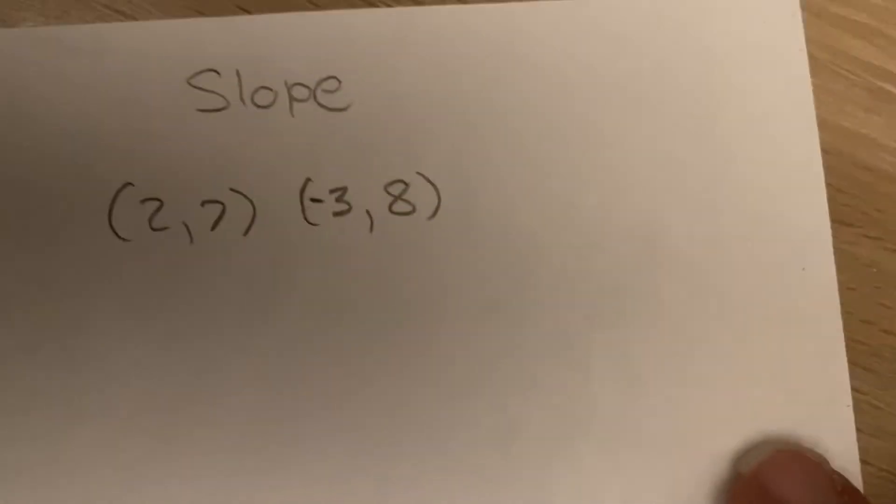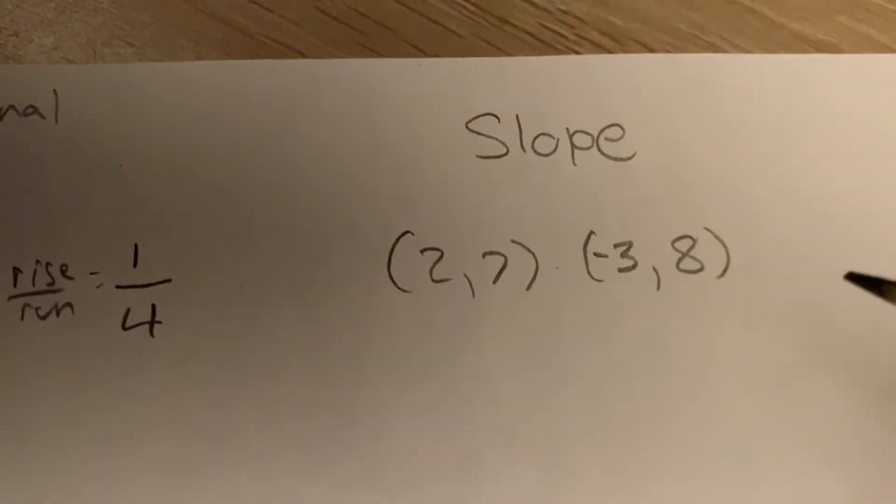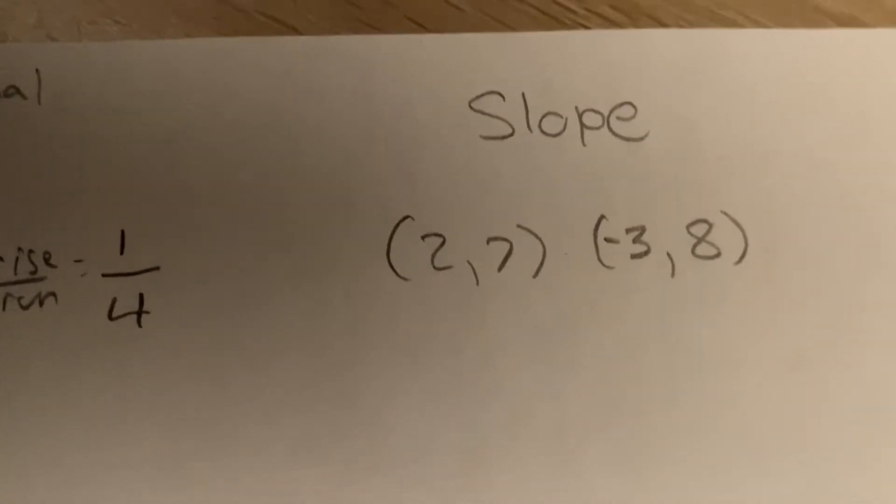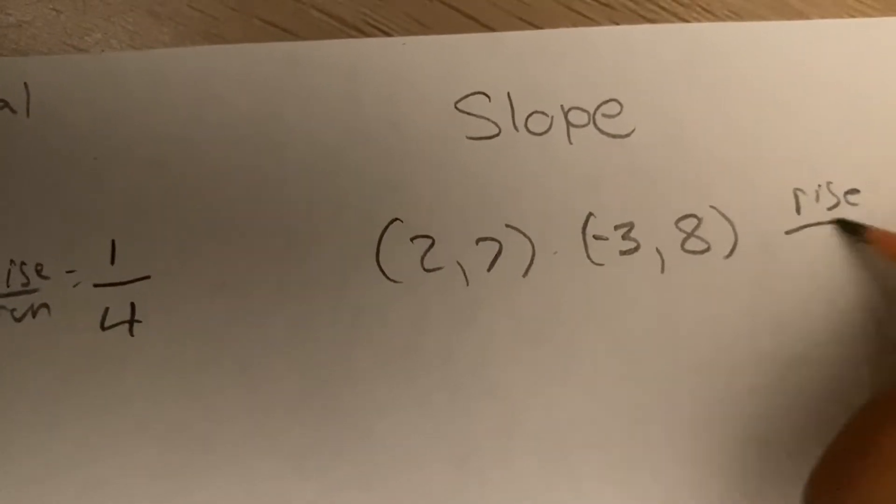All right, let's do the slope over here. What if you have no graph and all you have is the coordinates? Remember that it's rise over run.